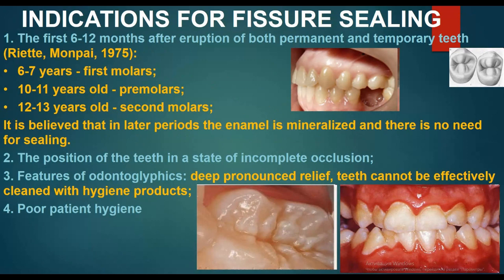Indications for fissure sealing: first, within six to twelve months after eruption of both permanent and temporary teeth — from six to seven years for first molars, from ten to eleven years for premolars, and from twelve to thirteen years for second molars. It is believed that in later periods the enamel is mineralized and there is no need for sealing.